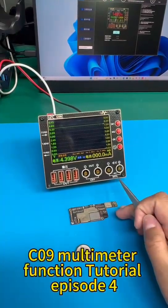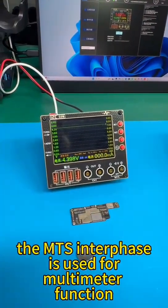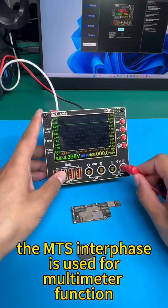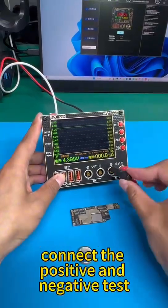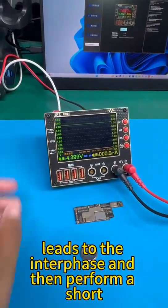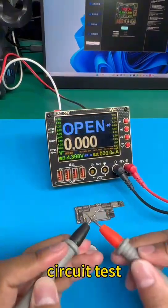C09 Multimeter Function Tutorial Episode 4. The MTS interface is used for multimeter function. Connect the positive and negative test leads to the interface and then perform a short circuit test.